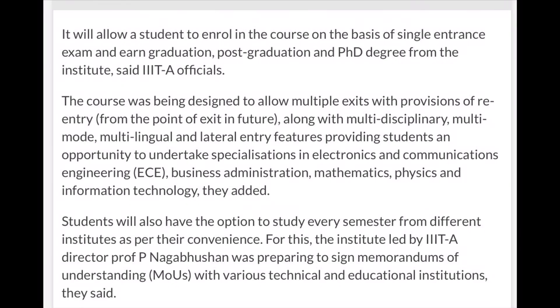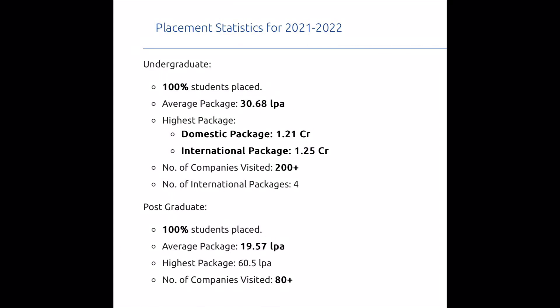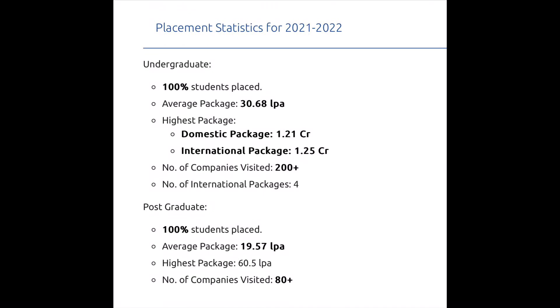Under the flexible program, I will show you the details. IIIT Hyderabad — in 2021-2022, 100% of students got placed. The average package was 30.6 LPA. The highest domestic package was 1.21 crores, and the international package was 1.25 crores. More than 200 companies visited, with 4 international companies offering packages. The average package is among the best for any IIIT in India.